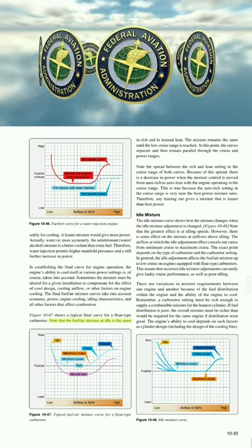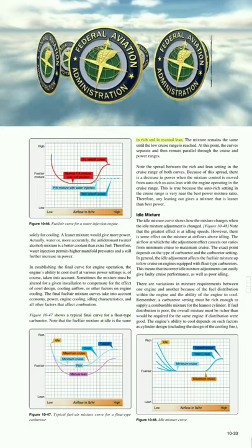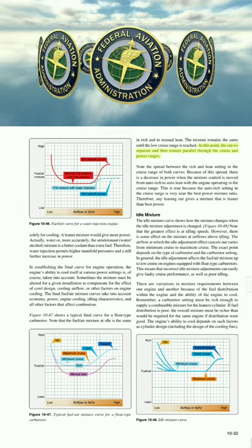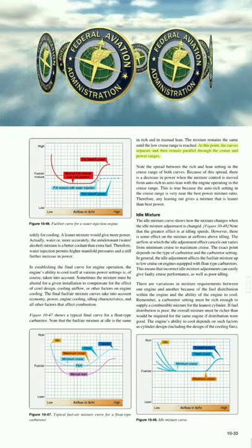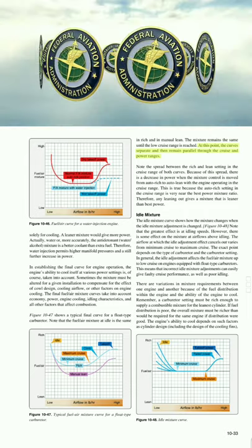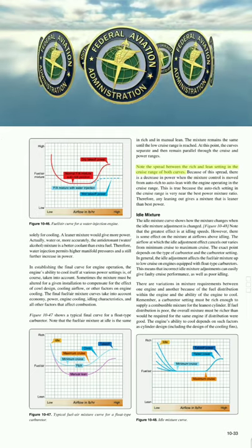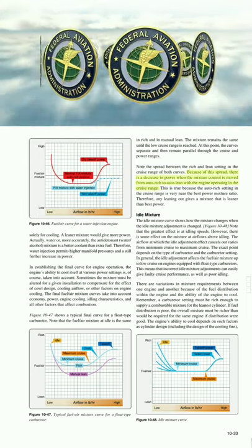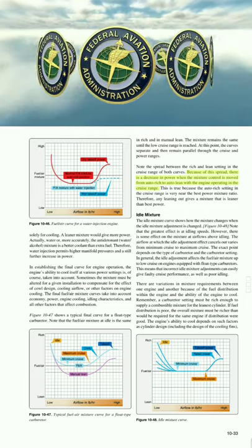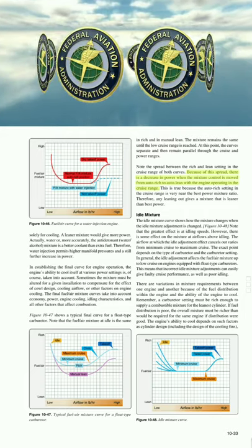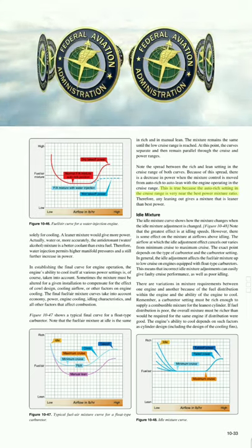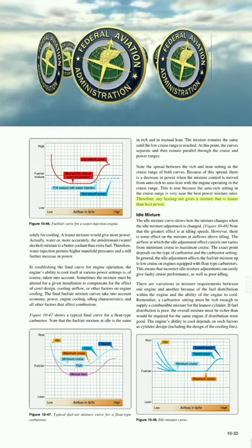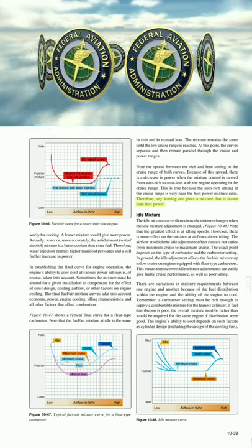Figure 1047 shows a typical final curve for a flow-type carburetor. At idle, the fuel/air mixture is the same in both rich and manual lean settings. The curves separate at the low cruise range, then remain parallel through the cruise and power ranges. There is a spread between the rich and lean setting in the cruise range, causing a decrease in power when the mixture control is moved from auto-rich to auto-lean, since auto-rich is very near the best power mixture ratio.